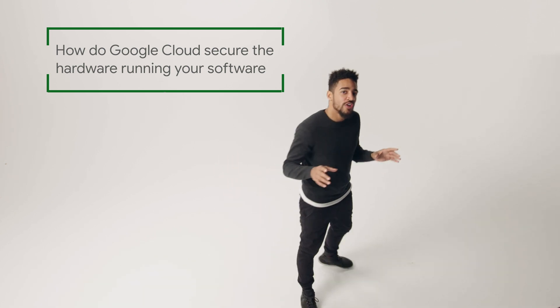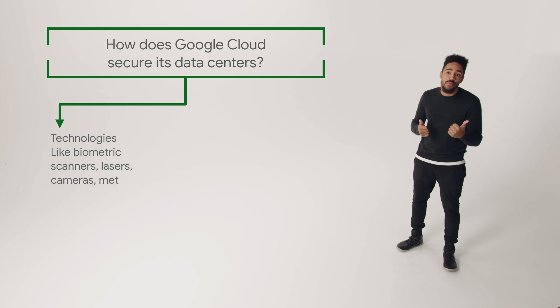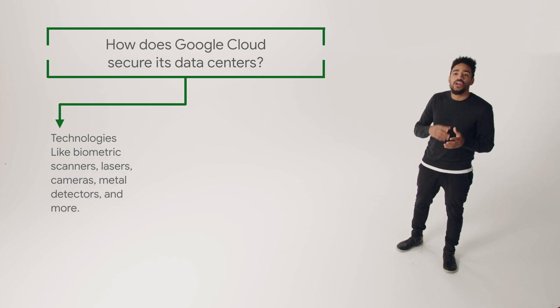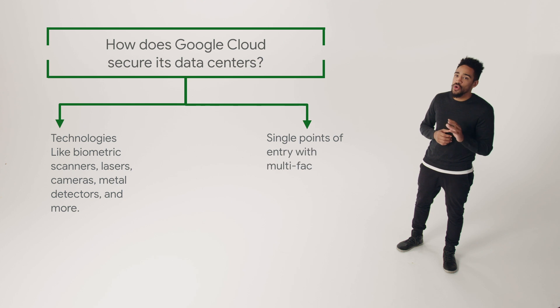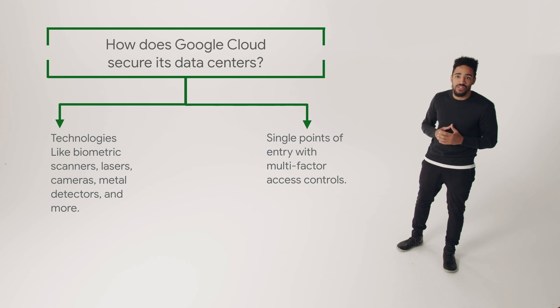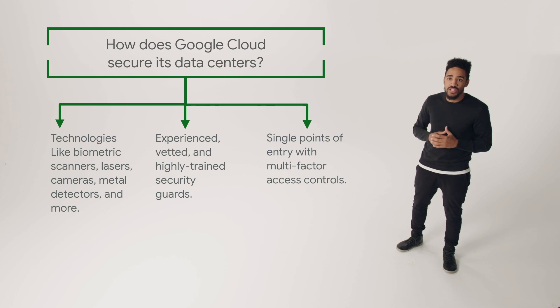Let's talk about securing the data center. On top of technologies like biometric identification, metal detectors, cameras, physical barriers, and laser-based intrusion detection, as you get closer to the data center floor, security measures also increase. Access to the data center floor is only possible via a security corridor, which implements multi-factor access controls using security badges and biometrics. Plus, data centers are routinely patrolled by experienced security guards who've undergone rigorous background checks and training.